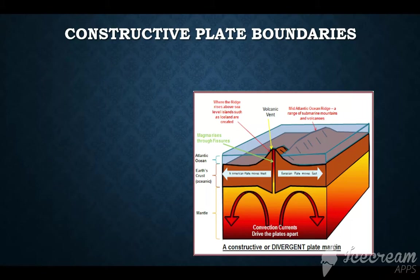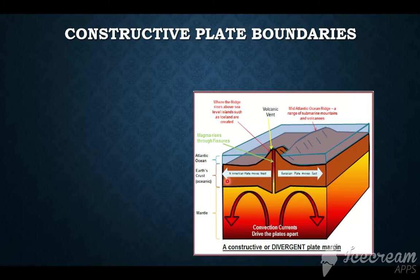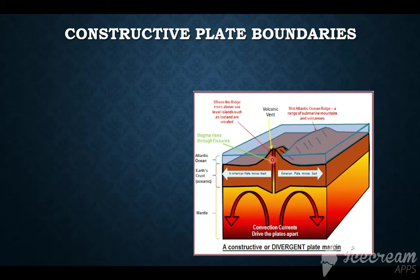Let's start with the constructive plate boundary. You can see the direction of the arrows, which reflects convection currents. Underneath the Earth's crust, convection currents are found just beneath the crust. At this point, the convection currents are moving away from each other, causing the overlying oceanic plates to move apart. The convection currents moving aside create tensional forces, which cause a line of weakness or gap known as a fissure. This results in magma rising and escaping through that fissure, and as a result, we end up having a volcanic mountain.